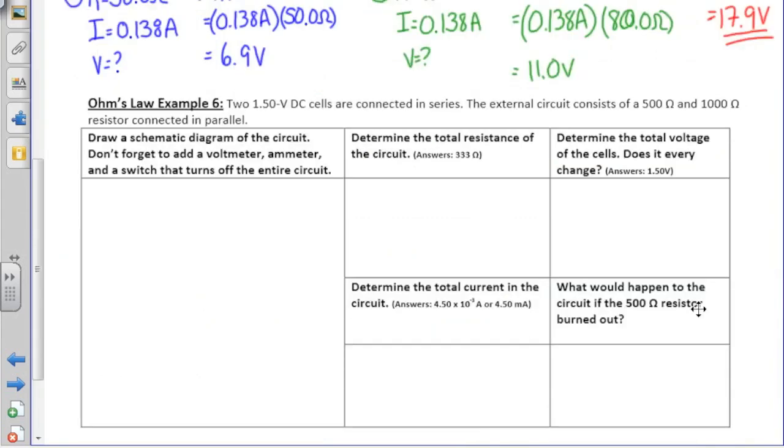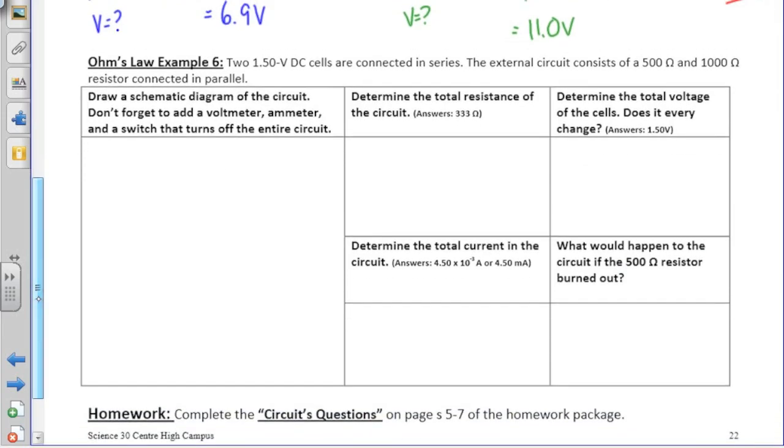So we will now look at Ohm's Law example 6 in our workbooks. This question is different from the question above because we're now looking at a parallel circuit with two 1.50 volt DC cells connected in series. So to begin our diagram, it's always easiest to start with our batteries because we have two cells. We will draw two batteries and they are connected in series. Our two resistors in this question are connected in parallel, so they will have to go on separate branches of our circuit.